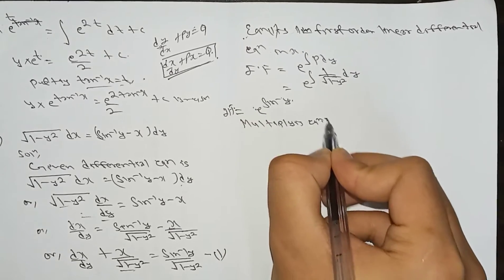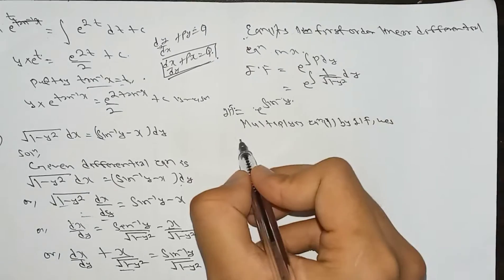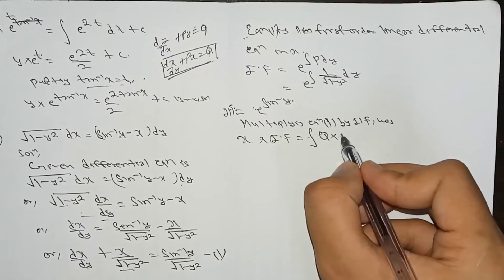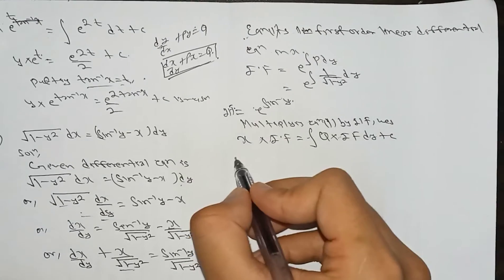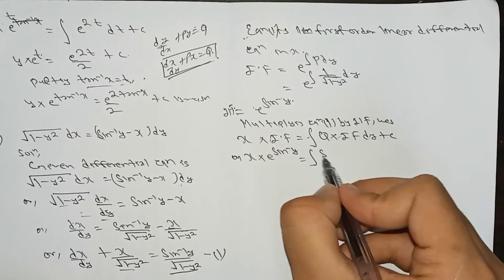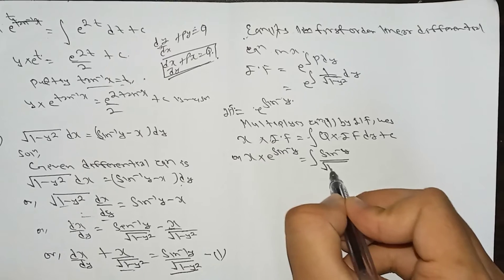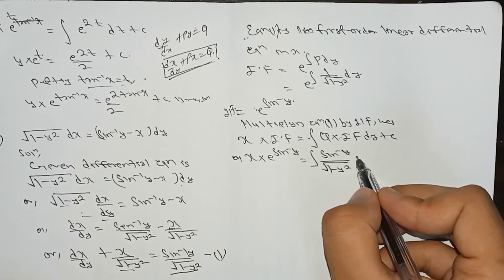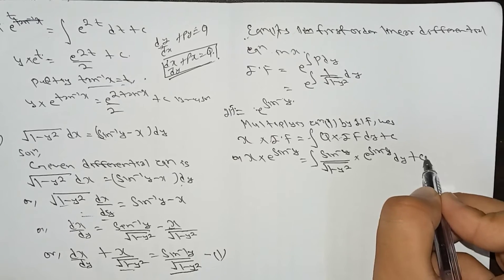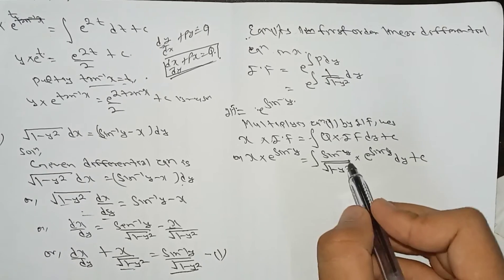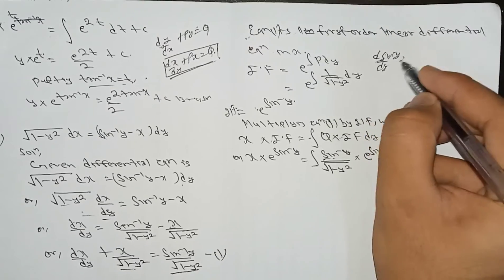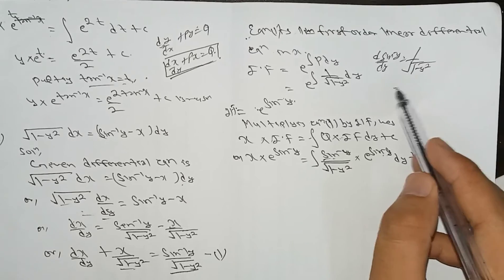Multiplying equation 1 by the integrating factor gives: x · e^(sin⁻¹y) = ∫Q · IF dy + c. Here Q = sin⁻¹y / √(1 - y²) and IF = e^(sin⁻¹y). Note that the derivative of sin⁻¹y with respect to y is 1/√(1 - y²).